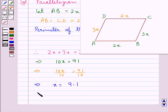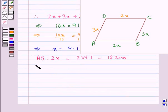Now, putting the value of x in AB, which is equal to 2x. So, AB is equal to 2 into 9.1, which would be equal to 18.2 centimeters. Then, DC would be equal to 3x, and this is equal to 3 into 9.1, which is equal to 27.3 centimeters.